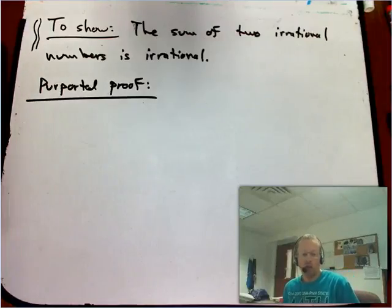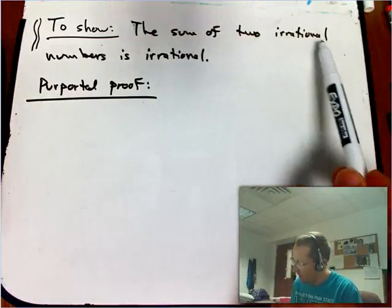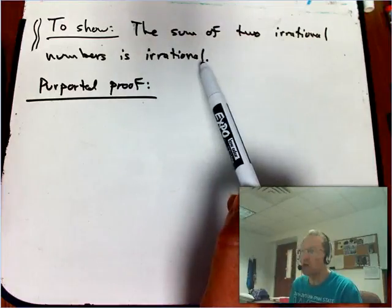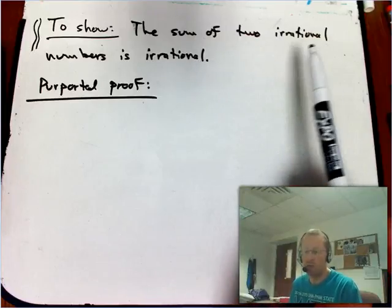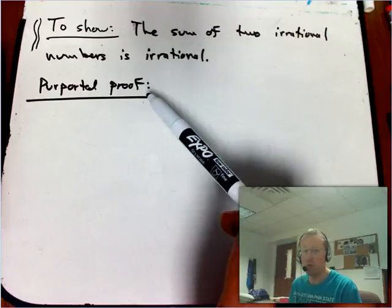Okay, here's another cautionary tale. The claim is that the sum of two irrational numbers is irrational. You might want to pause and think about what you think about the validity of that claim. And here's the purported proof.